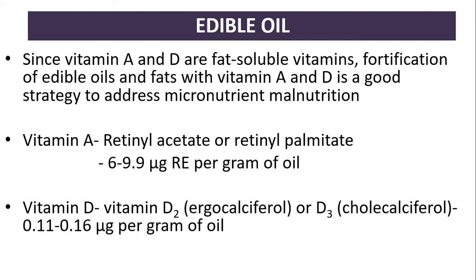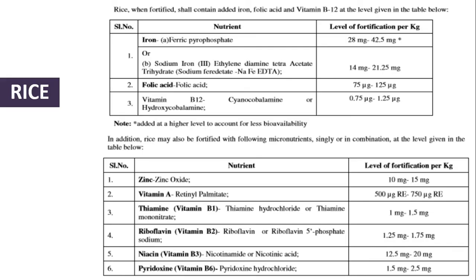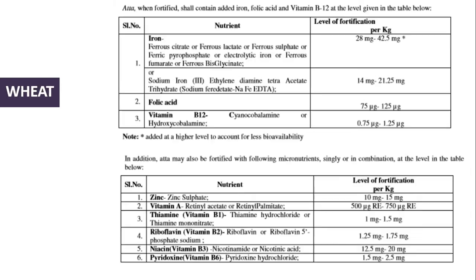Since vitamin A and D are fat-soluble vitamins, fortification of edible oils and fats with vitamin A and D is a good strategy to address micronutrient malnutrition. Vitamin A is added as retinyl acetate or retinyl palmitate at 6 to 9.9 micrograms RE per gram of oil. Vitamin D, as D2 (ergocalciferol) or D3 (cholecalciferol), is used at 0.11 to 0.16 micrograms per gram of oil.